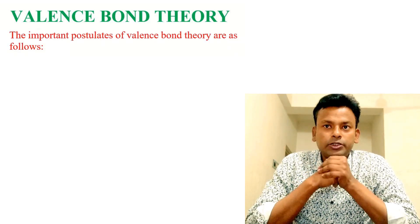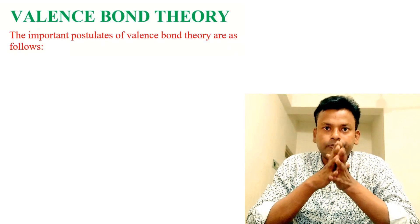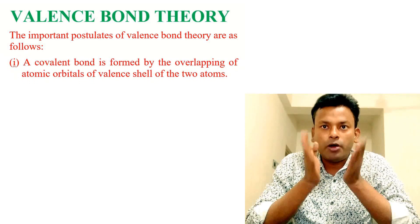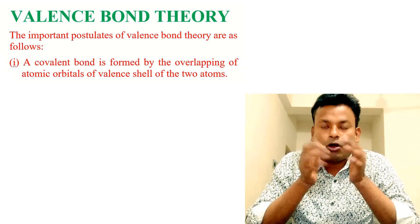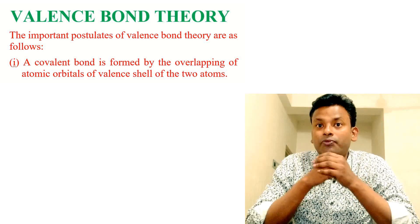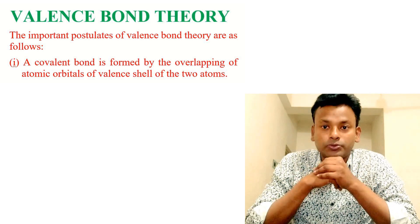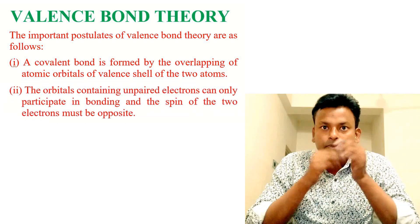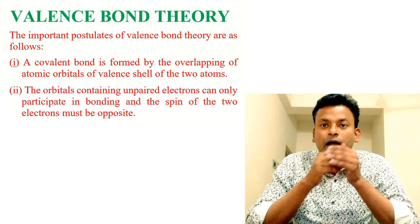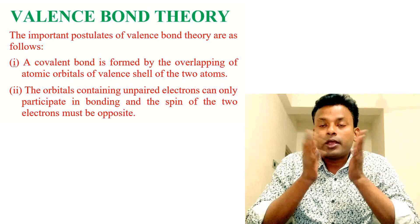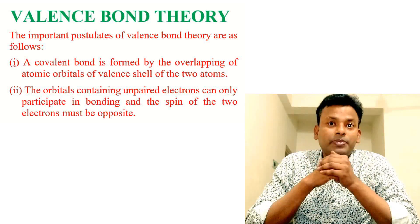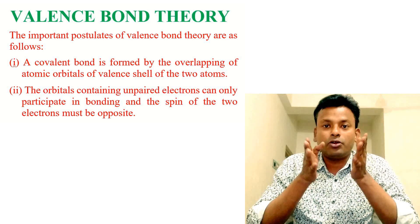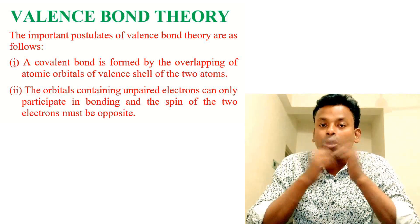The important postulates of Valence Bond Theory are as follows. First point: a covalent bond is formed by the overlapping of atomic orbitals of the valence shell of two atoms. Second point: the orbital containing an unpaired electron can only participate in bonding, and the spin of the two electrons must be opposite.